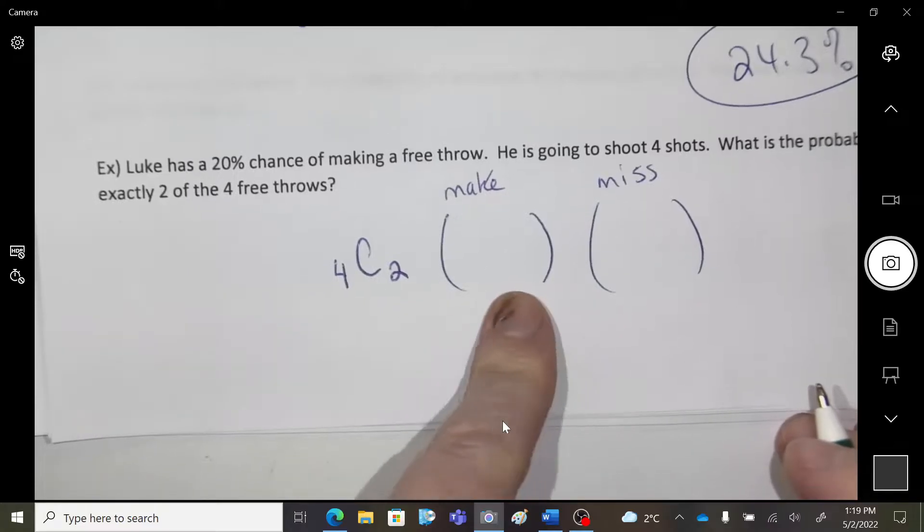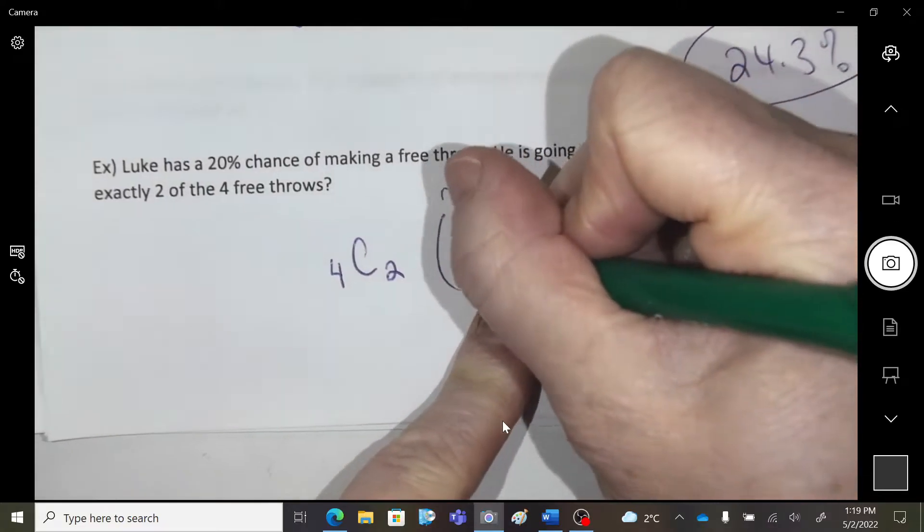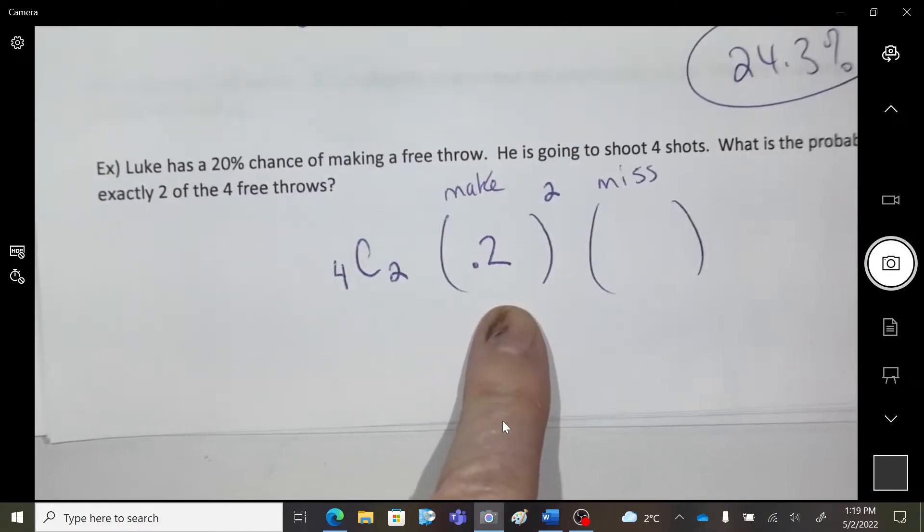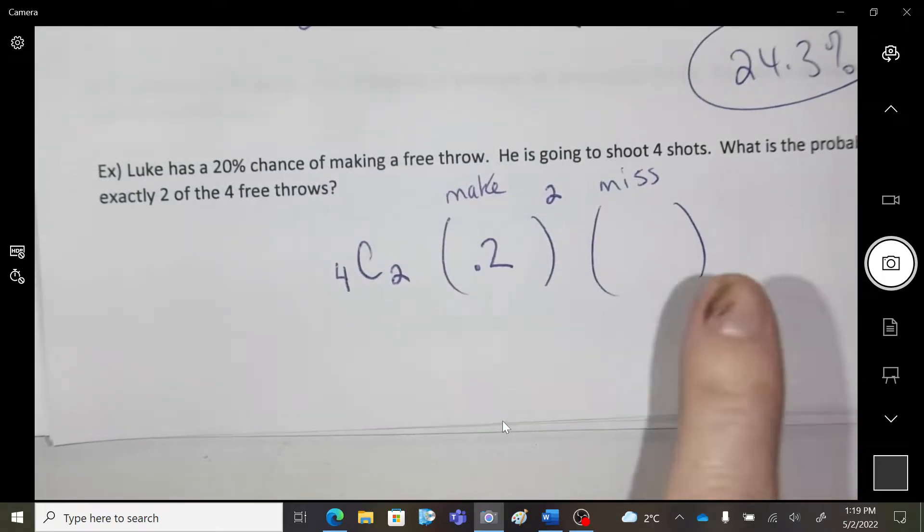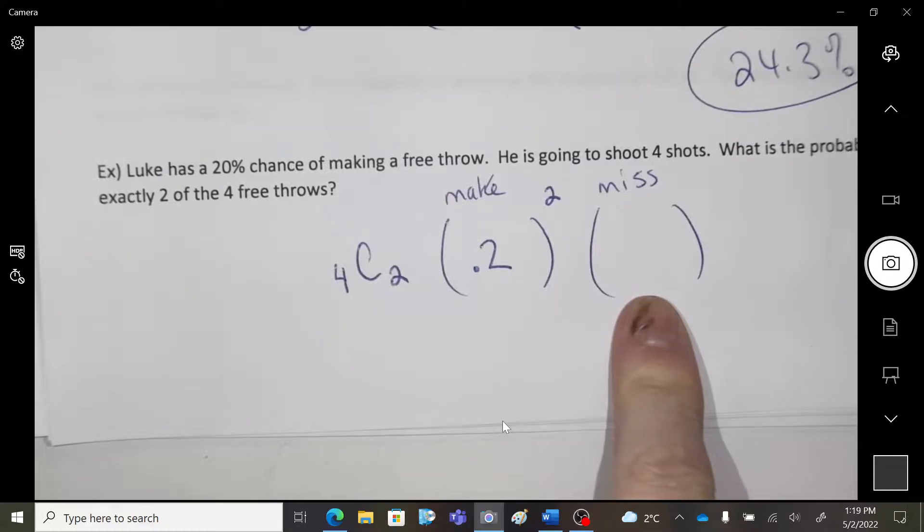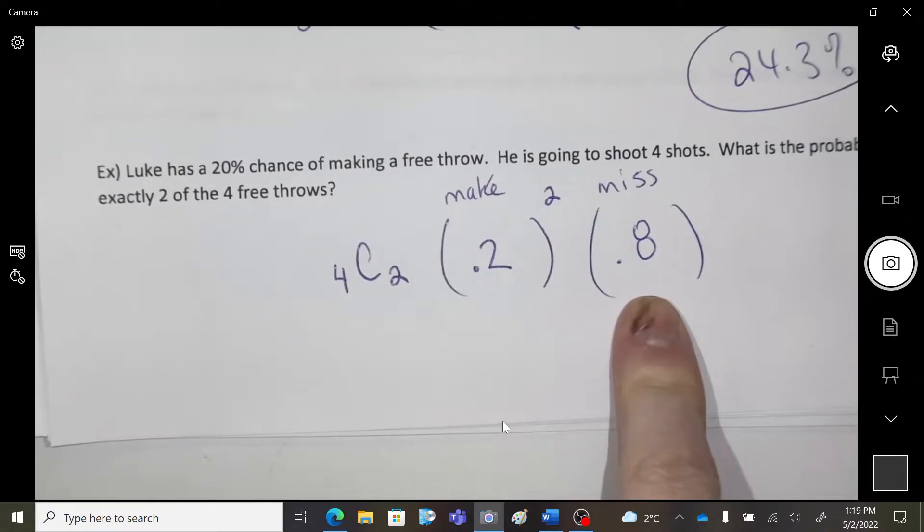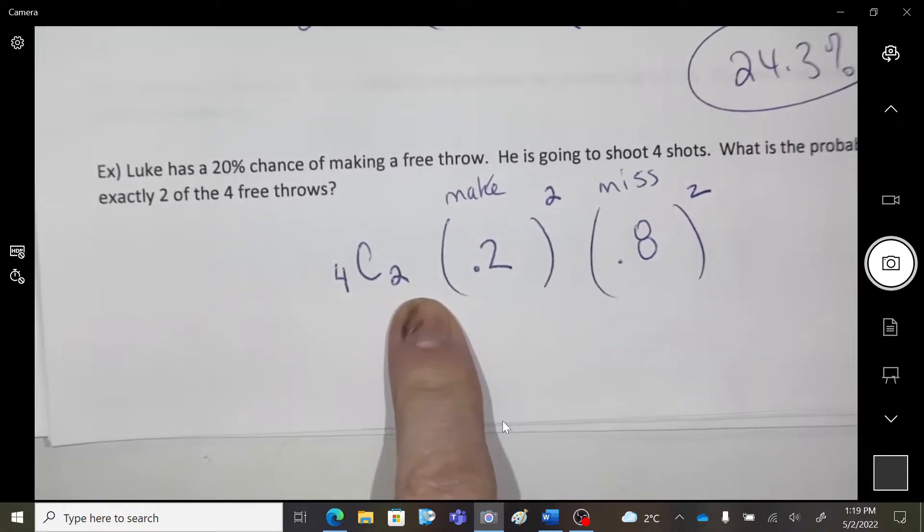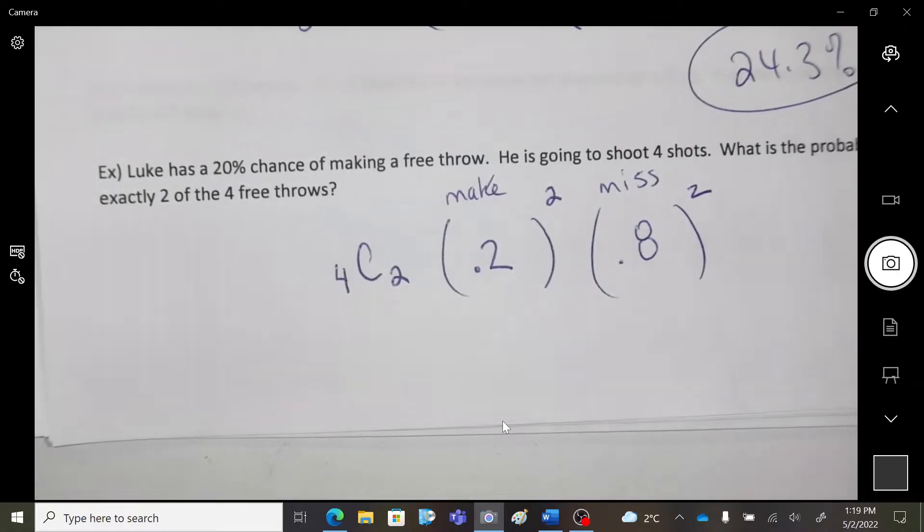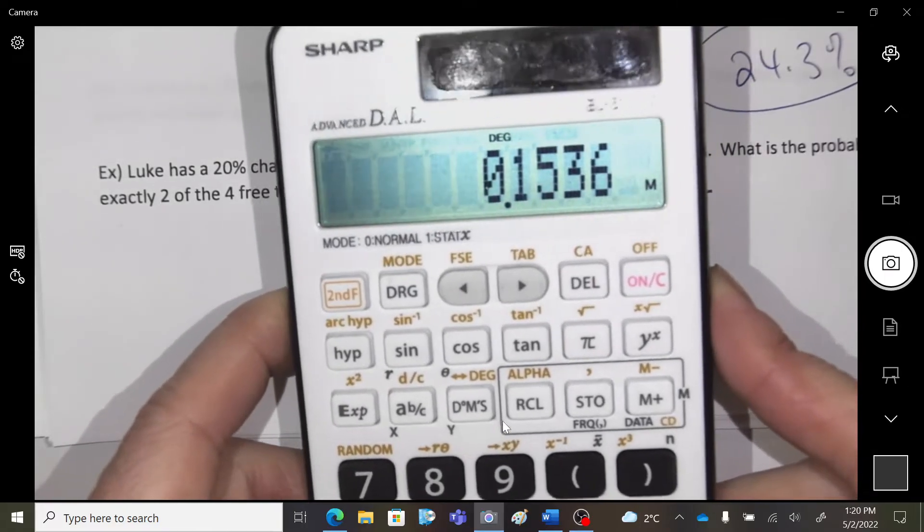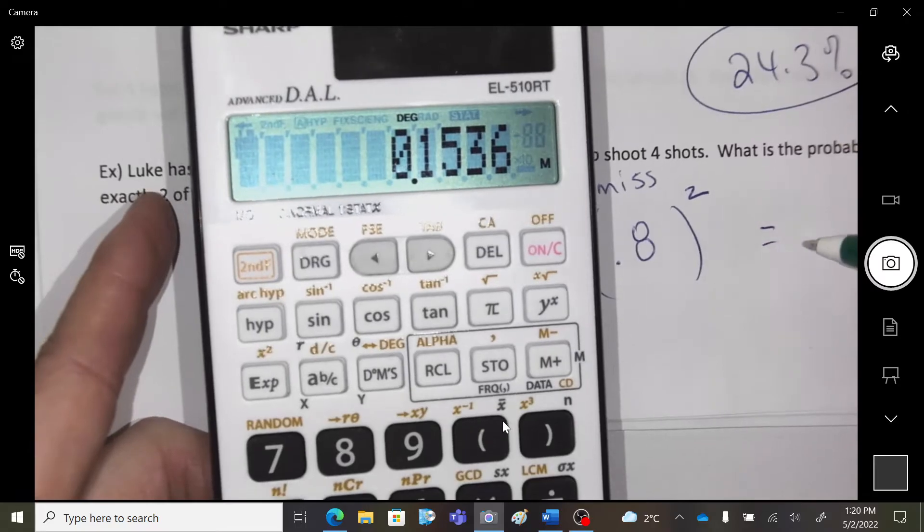Okay, there's a 20% chance he's going to make the shot. So 0.2. And he's going to make two of them. Now, what are the odds that he's going to miss the shot? 80% chance of missing. And he's going to miss two. Make two, miss two. Okay, and I just typed all of that in in one long step. So 0.1536.